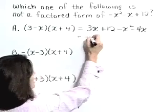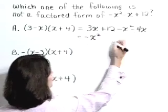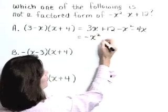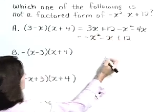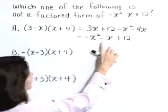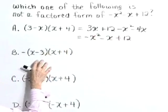Rewriting and bringing that negative x squared to the front, combining like terms gives negative x squared minus x plus 12. So multiplying, we do get the same trinomial. A is a factored form of that trinomial.